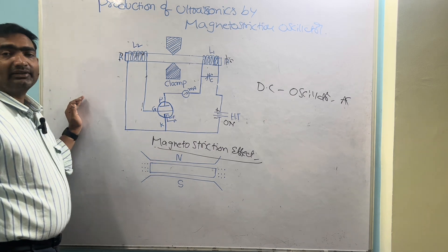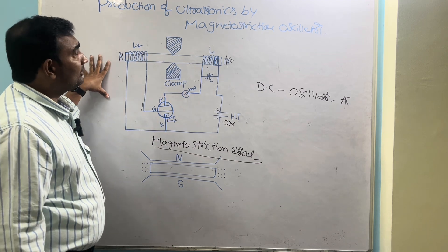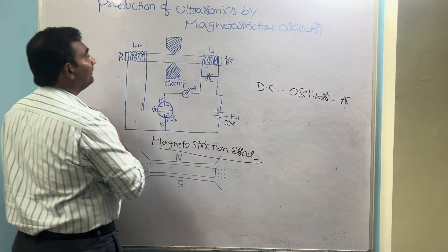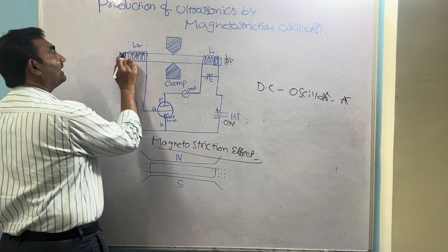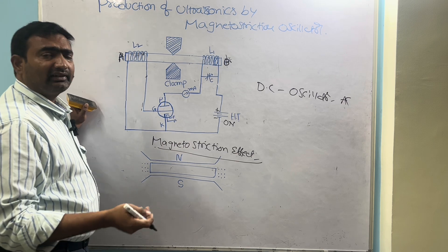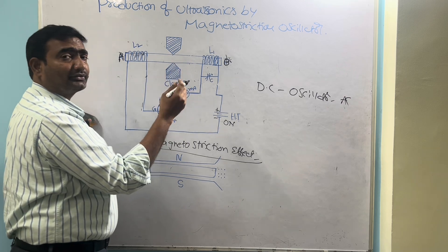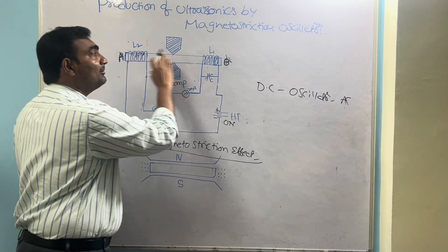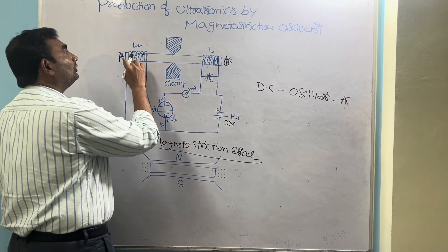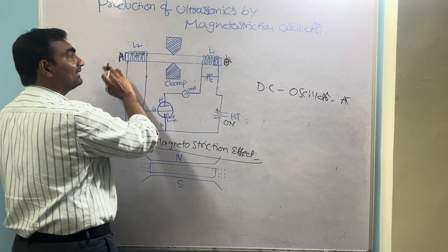Now let us see the construction of the magnetostriction oscillator. This is the circuit diagram of the magnetostriction oscillator. It consists of a ferromagnetic rod A-B — it may be iron or nickel. It is ferromagnetic and it is pre-magnetized: some DC current is passed through it so that it gets permanently magnetized. On rod AB, two coils L1 and L2 are wound at the two ends.